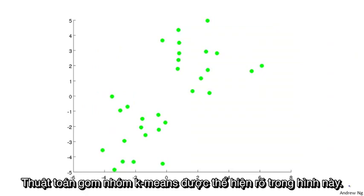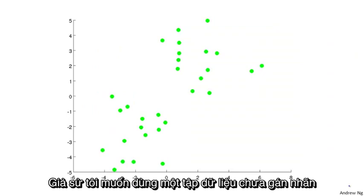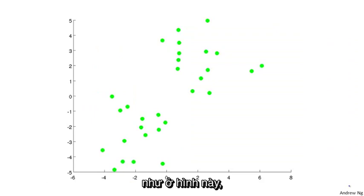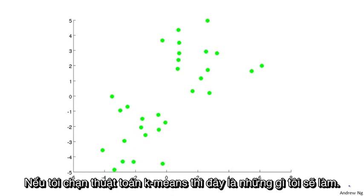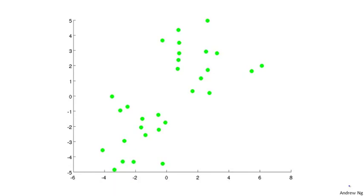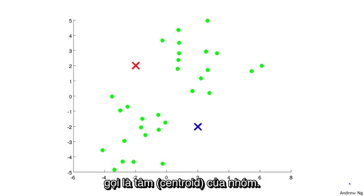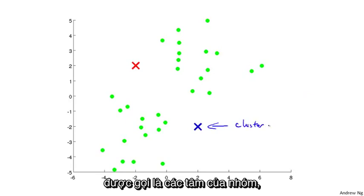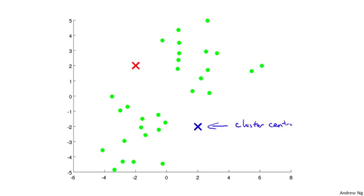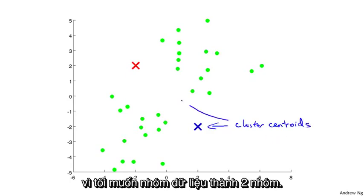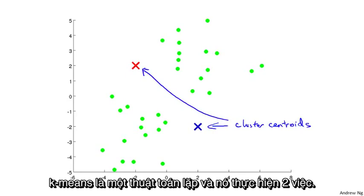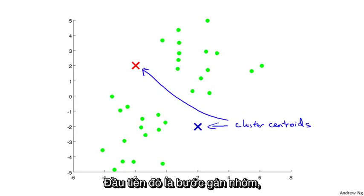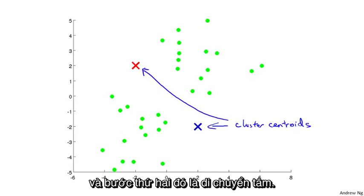The k-means clustering algorithm is best illustrated in pictures. Let's say I want to take an unlabeled data set like the one shown here and I want to group the data into two clusters. If I run the k-means clustering algorithm, the first step is to randomly initialize two points called the cluster centroids. K-means is an iterative algorithm and it does two things: first is a cluster assignment step and second is a move centroid step.